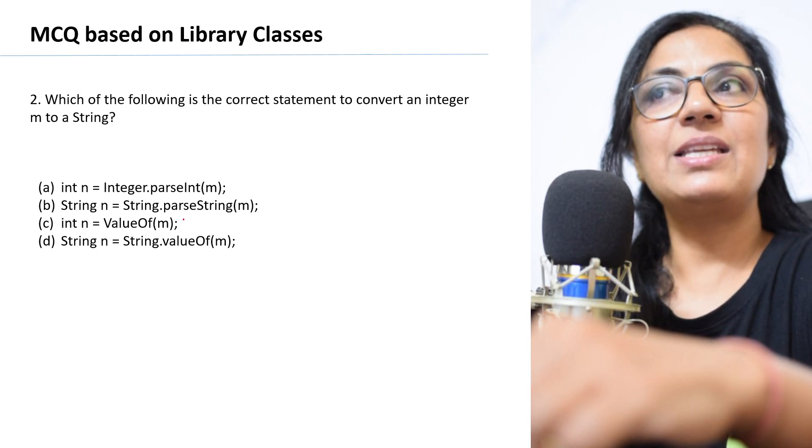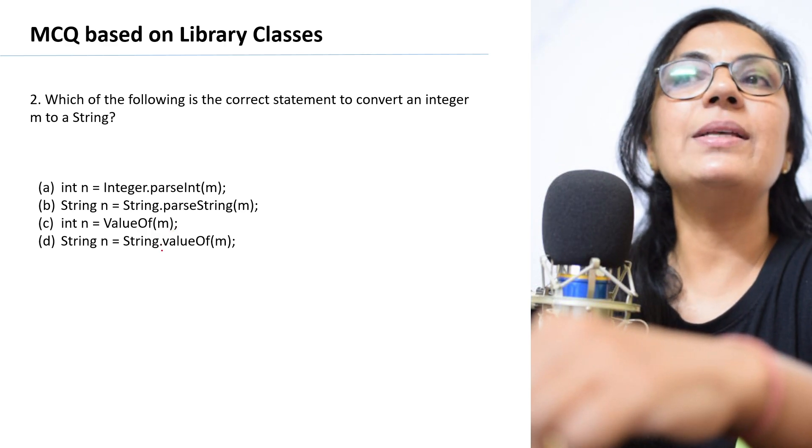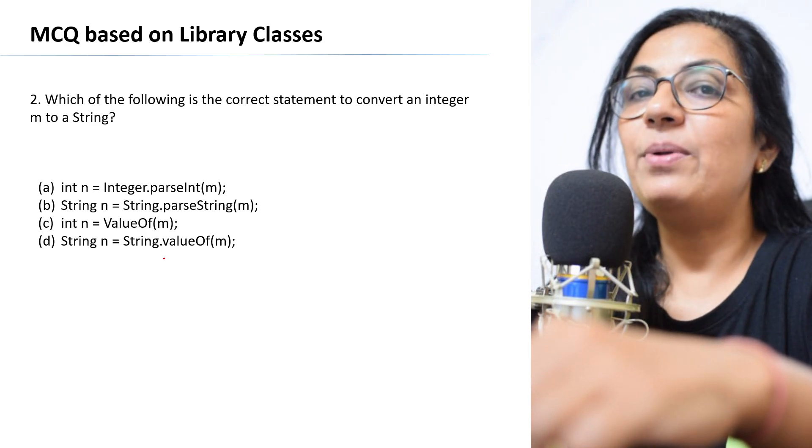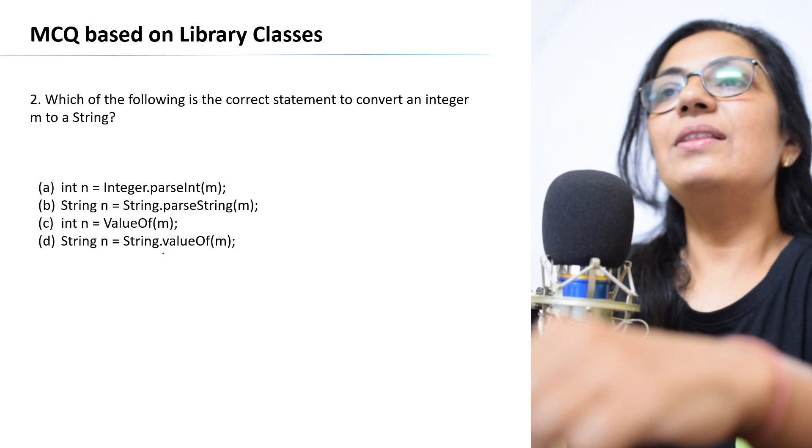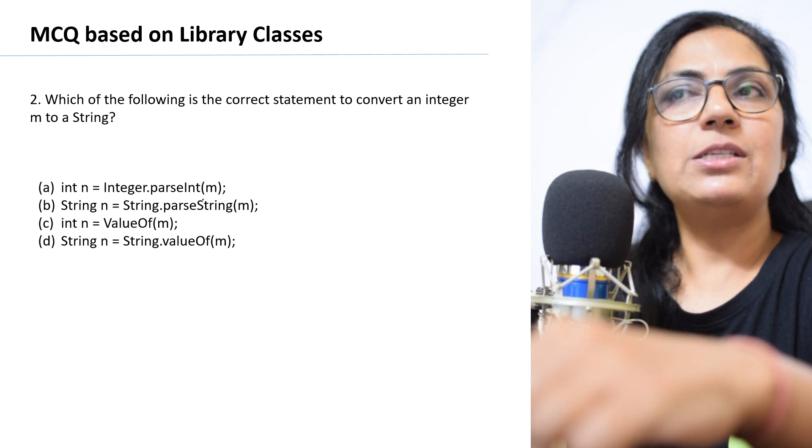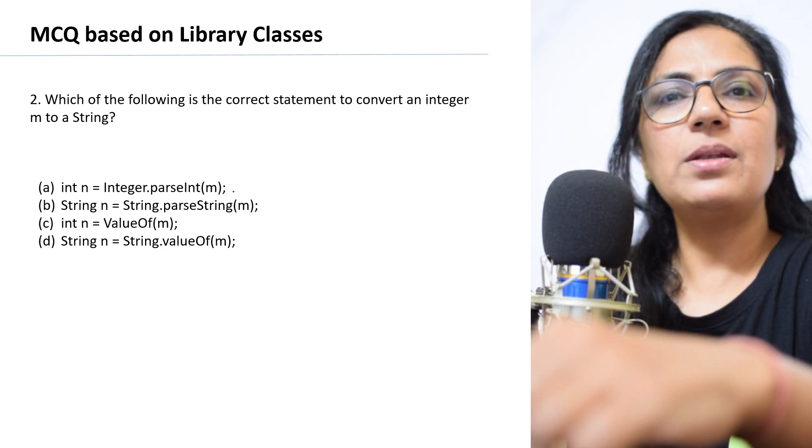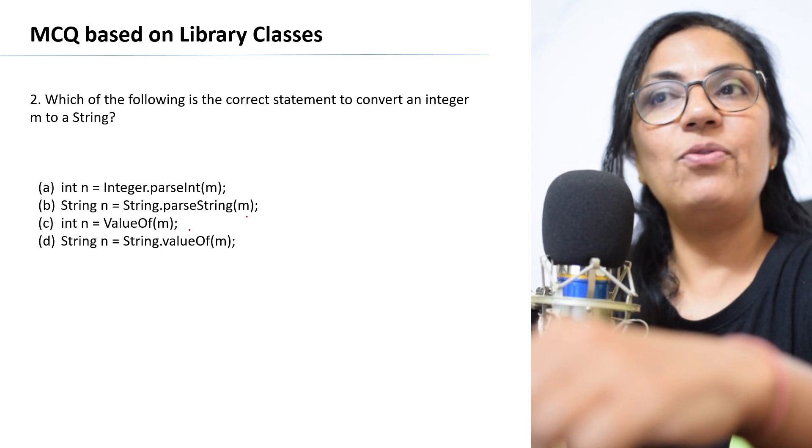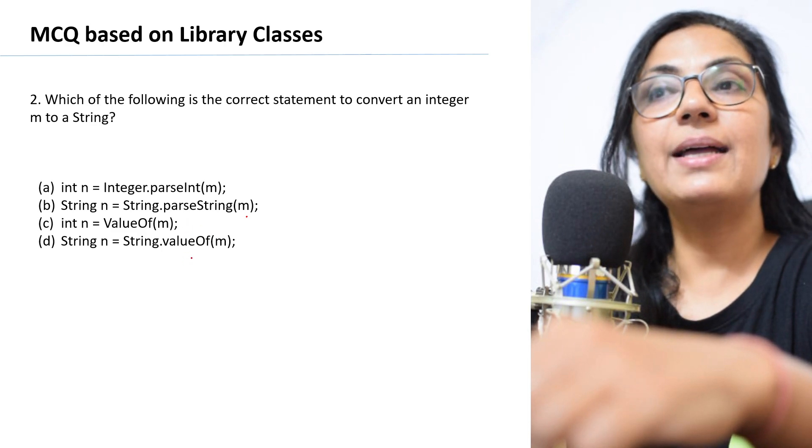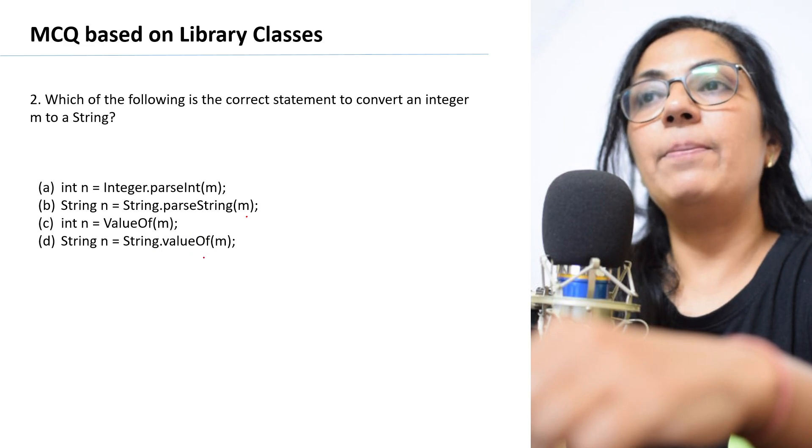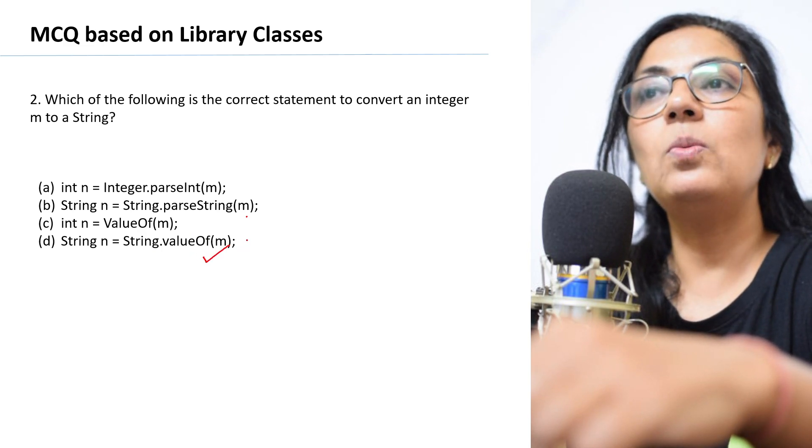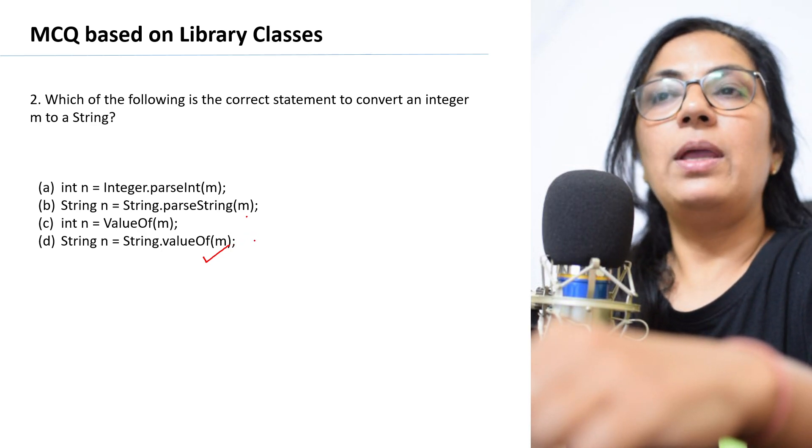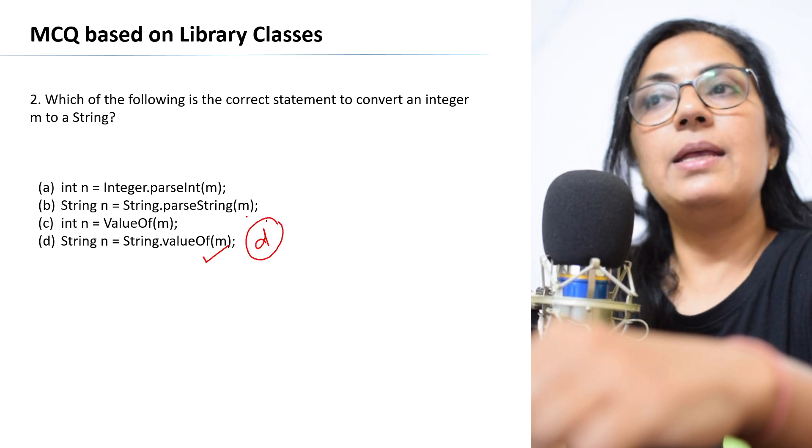We move on to the next question. Which of the following is the correct statement to convert an integer into a string? We have done the functions in library classes videos. For int n equals to integer dot parseInt, this option is correct? No. String dot parseString? No. Int n valueOf? No. What is the correct answer? String dot valueOf m. This is the function used to convert int type to a string value. Option D is the correct answer.